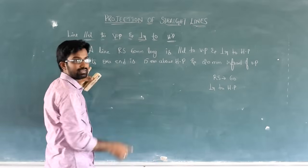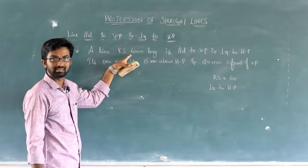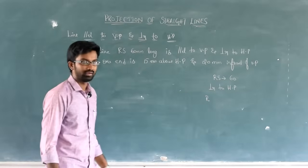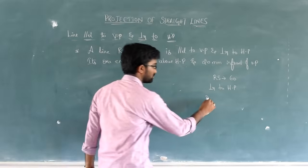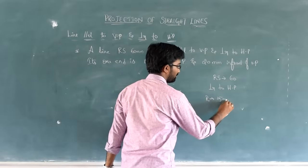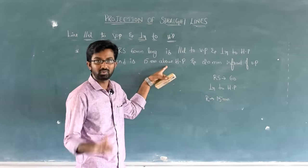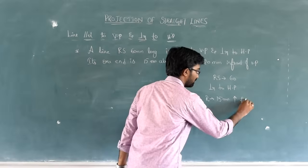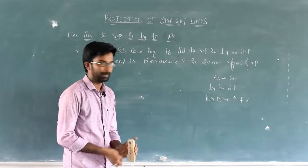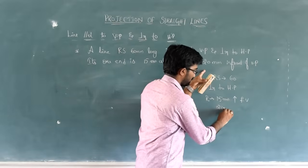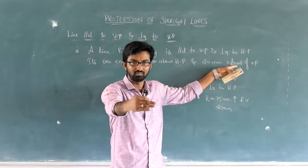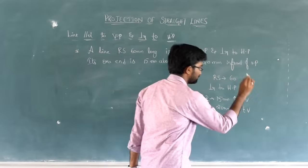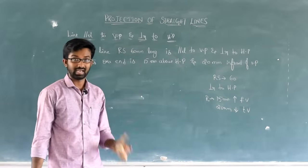Next, it's one end is - this line has two ends, R and S. One end needs to be specified. So, take any end. Let us say R. It's one end is 15 mm above HP. So, R is 15 mm above, which means 15 mm upward, which is front view. So, front view, done.